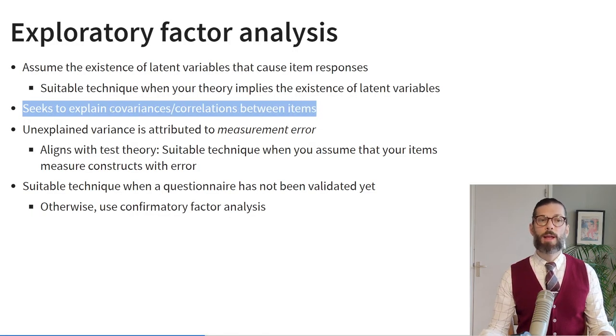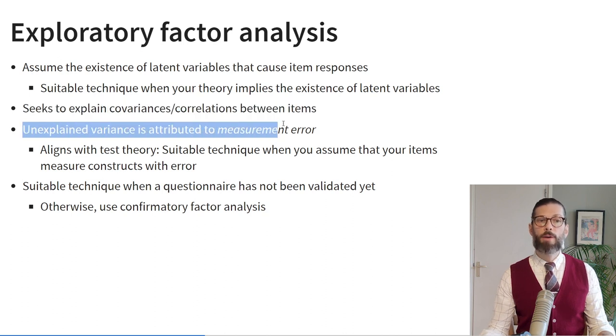Exploratory factor analysis tries to explain the covariances between items; unexplained variance is attributed to measurement error. This is similar to test theory — it's suitable when you can assume that observed item scores are a function of some true score plus measurement error. EFA is particularly useful when you're using a questionnaire that has not been validated yet, such as when developing a new questionnaire. If using an already validated questionnaire, it's more appropriate to use confirmatory factor analysis. What's different between EFA and PCA is that EFA is a latent variable technique — PCA is just data rotation. EFA is a model about latent variables with unknown parameters, namely factor loadings and error variances, that have to be estimated.